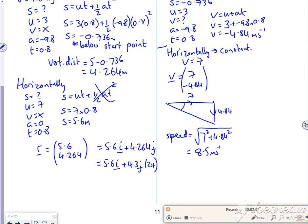And then if I want theta, so tan theta is 4.84 over 7, which gives us an angle of 34.6 degrees, so 35 degrees to 2 sig fig. So it's travelling at a speed of 8.5 metres per second at 35 degrees below the horizontal.